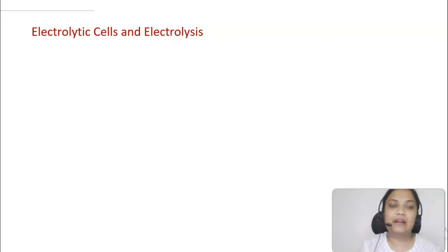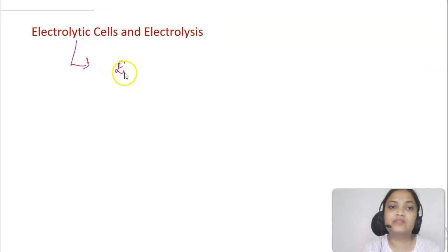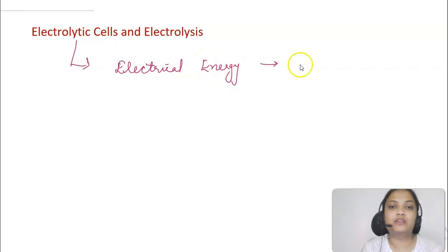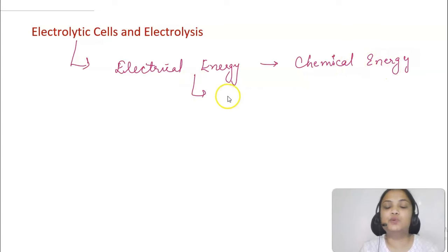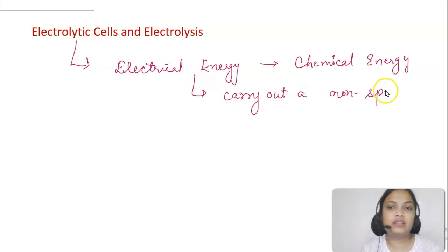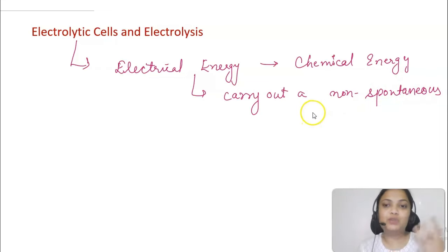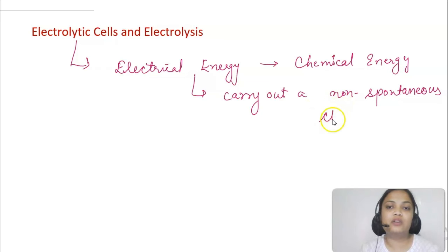What do you mean by an electrolytic cell? I have covered the difference between electrochemical and electrolytic cell in the first lecture. Electrolytic cells are the ones where electrical energy is converted to chemical energy. It means that electrical energy is used to carry out a non-spontaneous chemical reaction — one that will not happen on its own and requires some source of energy.